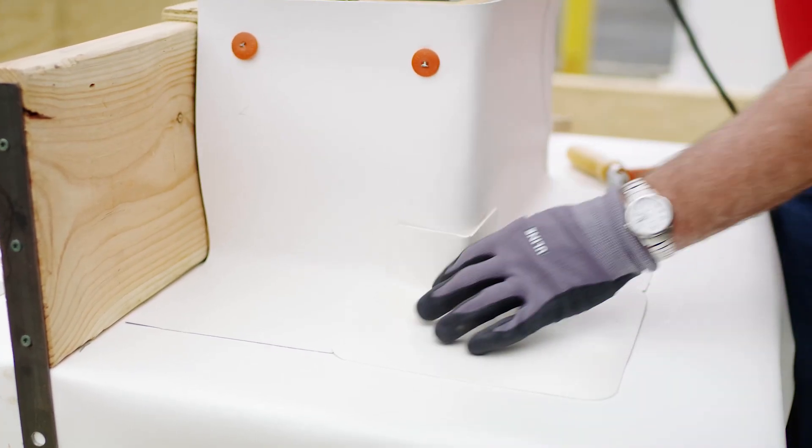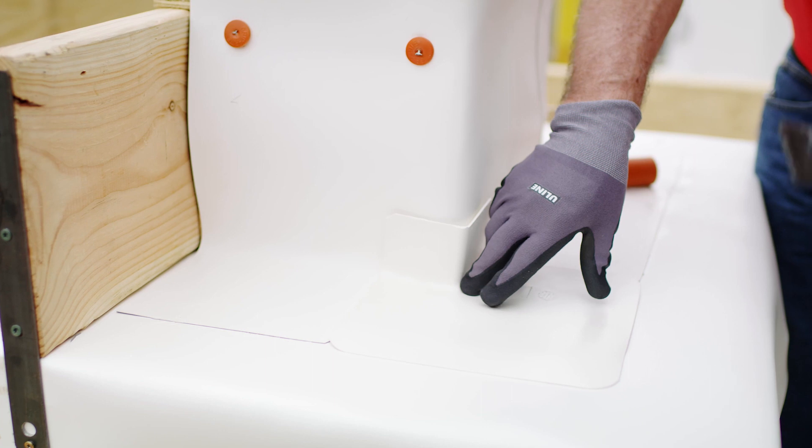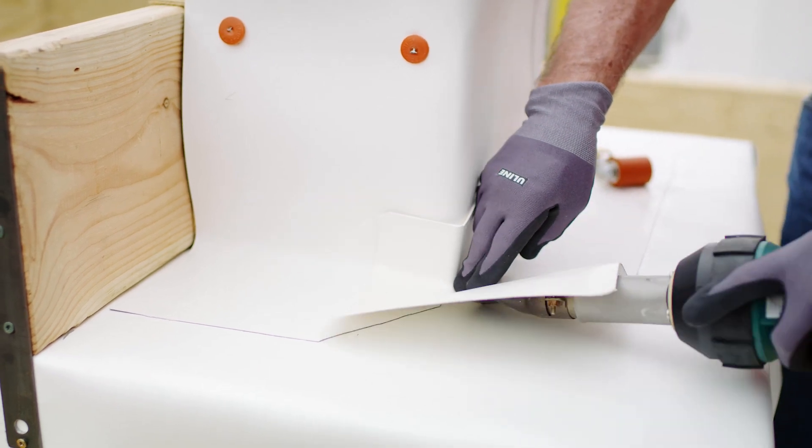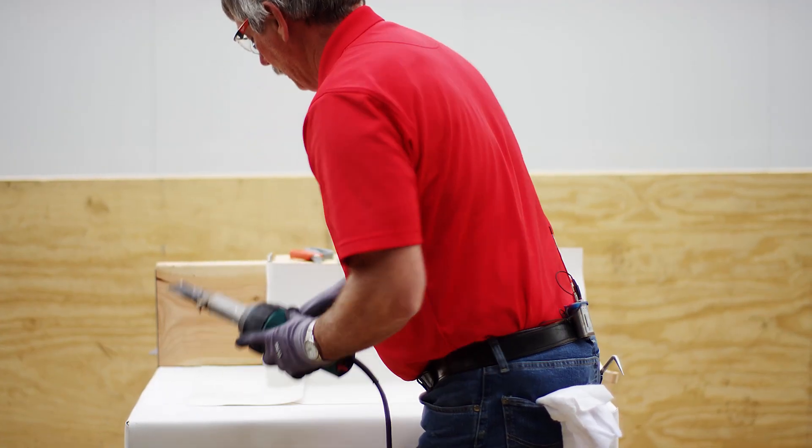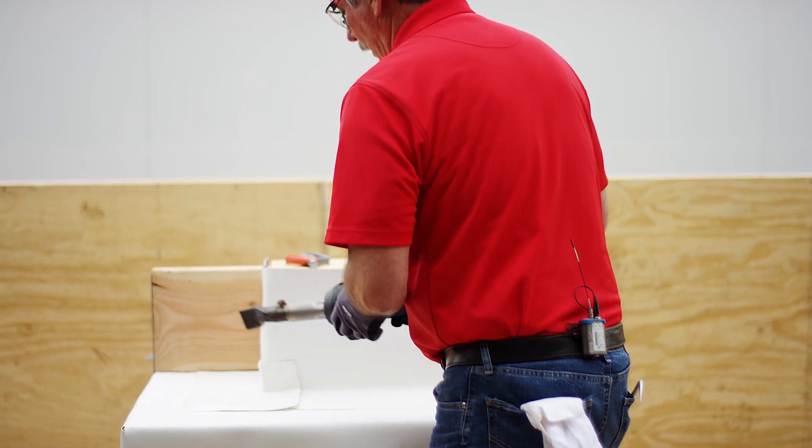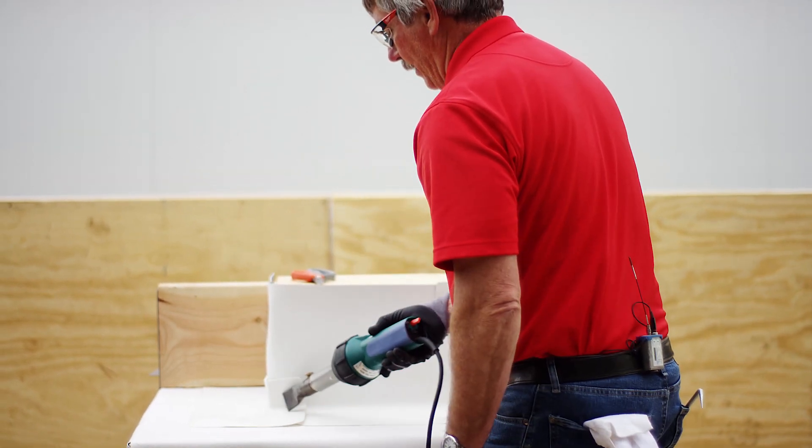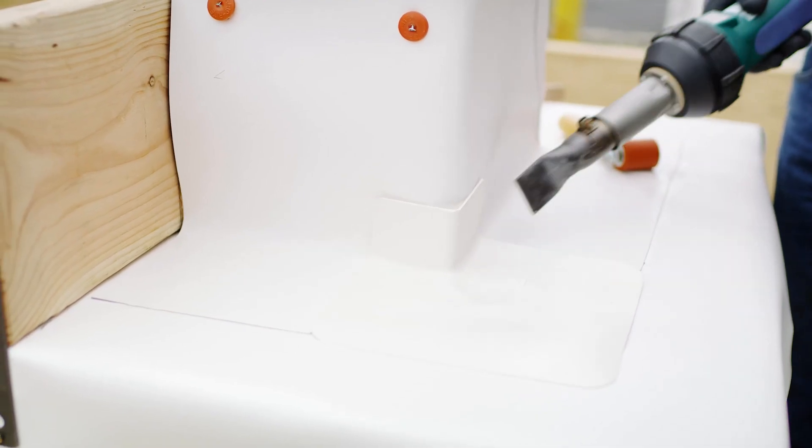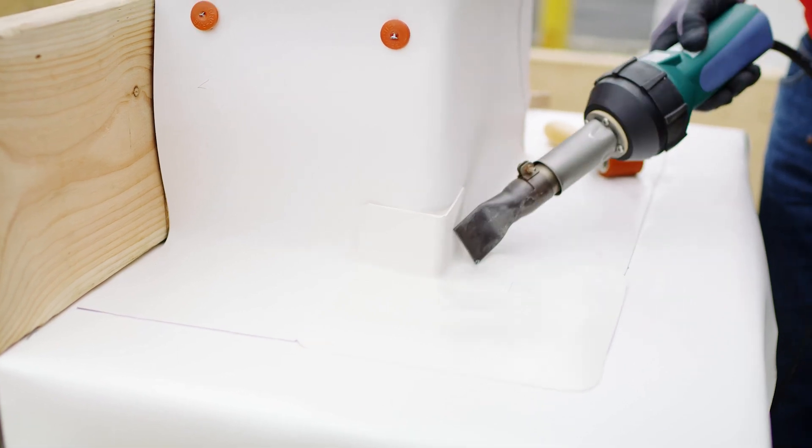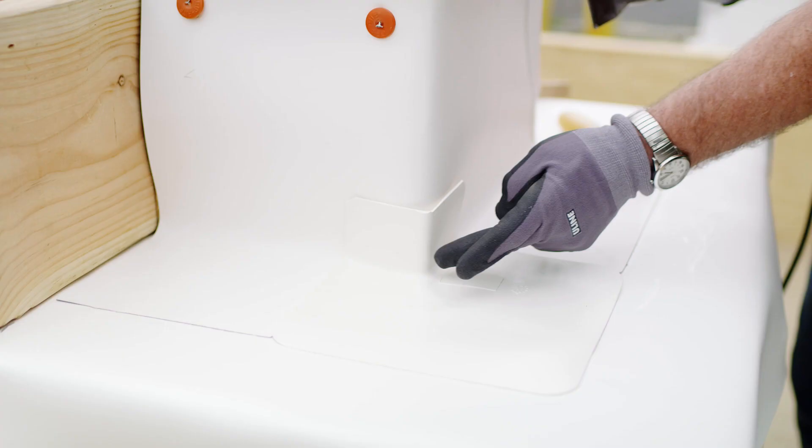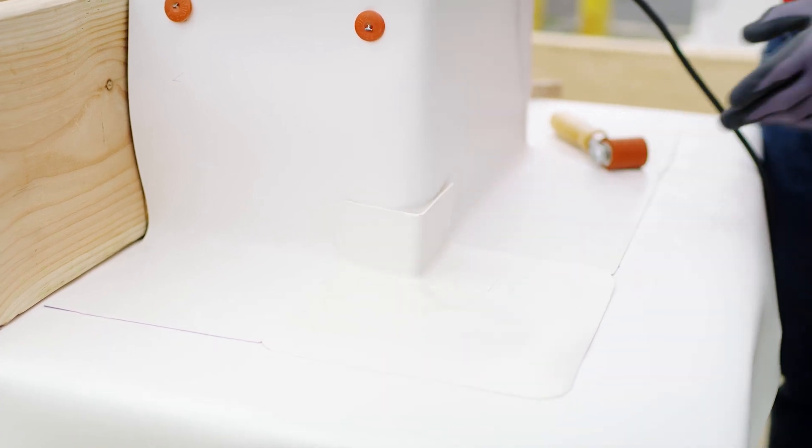So what I typically like to do, I like to kind of get it where I want it, get it centered. I'm just going to give a little tack so it doesn't slide around on me. Make sure that's holding. Now I'm going to lay a little heat on the outside. Soften this material up a little bit. Now I want to get my gun all the way back. I want to make sure these areas are welded solid.